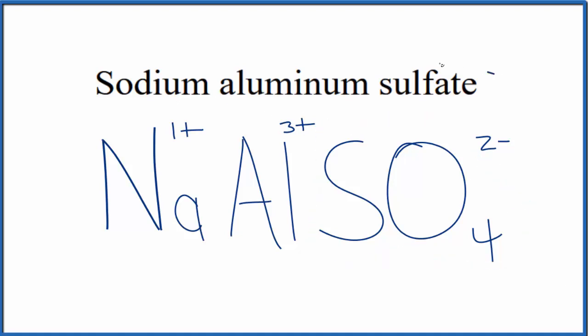For sodium aluminum sulfate, this is neutral—it doesn't say 'ion' after it—so all of these charges have to add up to zero, giving us a net charge of zero. Right now we have 1 plus and 3 plus, that's 4 plus, and then we have 2 minus, so it doesn't add up to zero.